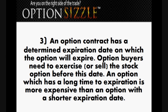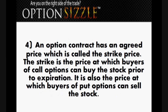An option contract has a determined expiration date on which the option will expire. Option buyers need to exercise or sell the stock option before this date. An option with a long time to expiration is more expensive than an option with a shorter expiration date. An option contract also has an agreed price called the strike price — the price at which buyers of call options can buy the stock, and also the price at which buyers of put options can sell the stock.